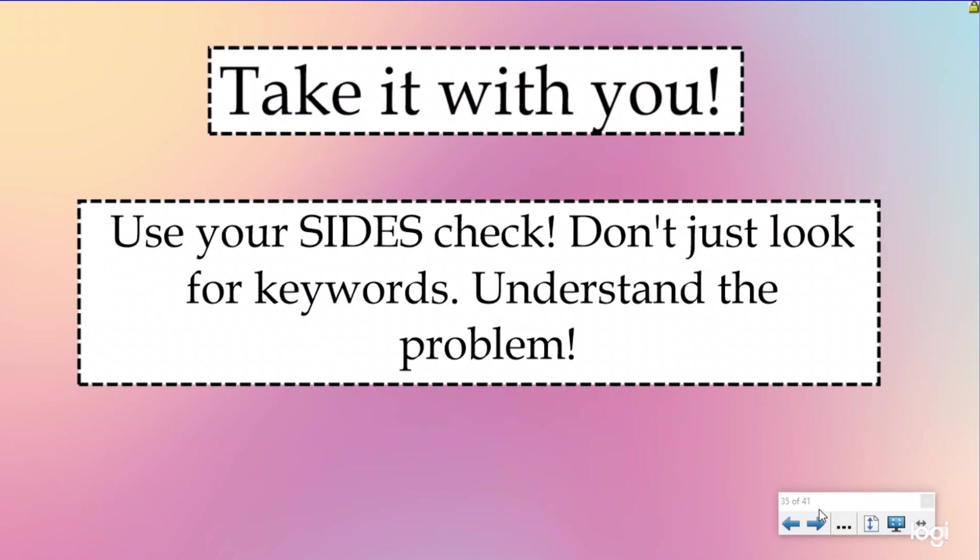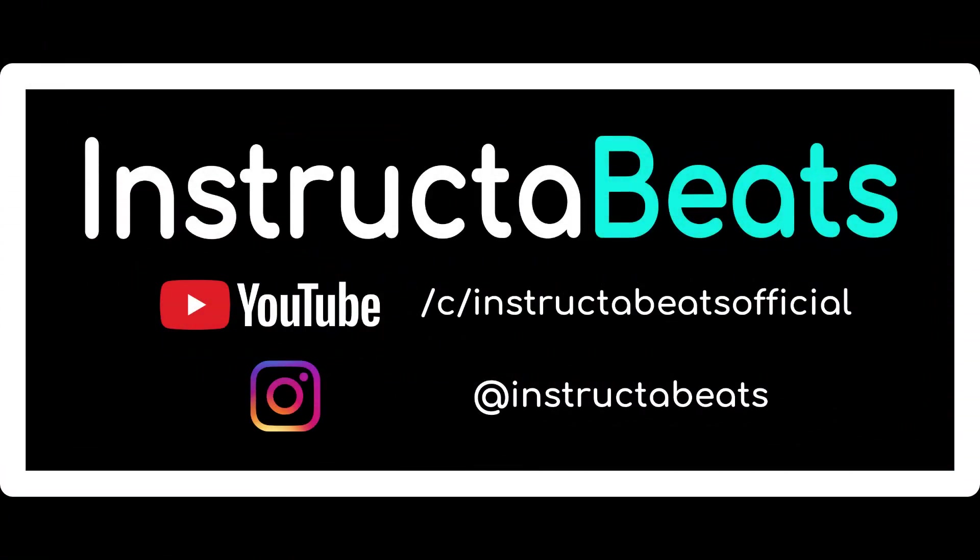So what we want you to take with you today is you need to do your Sides Check. Don't just look for keywords. Understand the problem. If you notice for every question that we did, I drew a picture of it. I labeled it. Then I did my tape diagram to help me solve it. I didn't just circle words. I explained why I was circling them and what they helped me know about the question. Understand the problem. Don't just be a keyword or a number grabber. Thank you so much for checking us out today. We really appreciate you spending your time with Instructor Beats. You can check out our area and perimeter song if you need a little bit extra help. As always, please like and subscribe. Instructor Beats out.